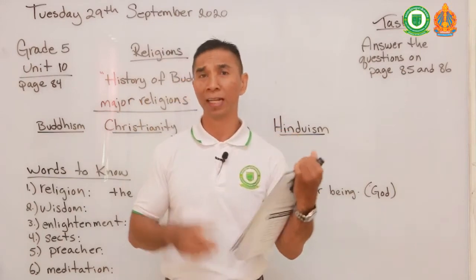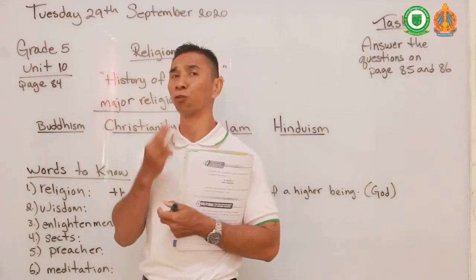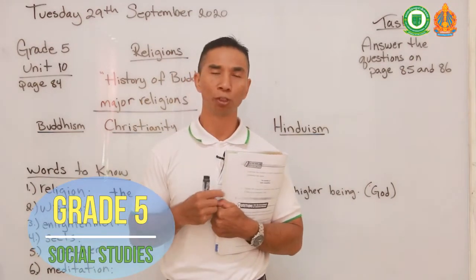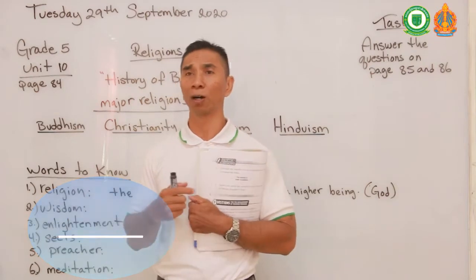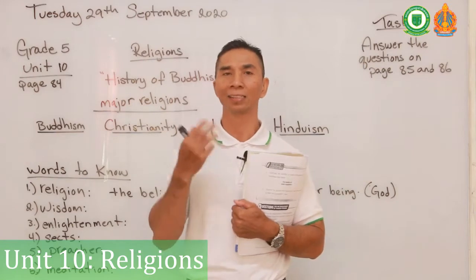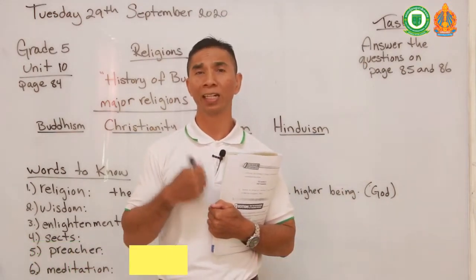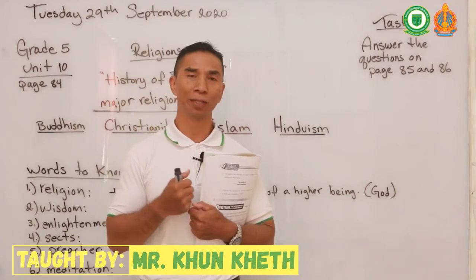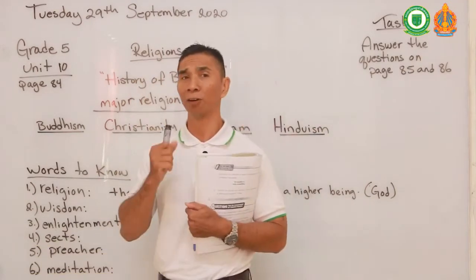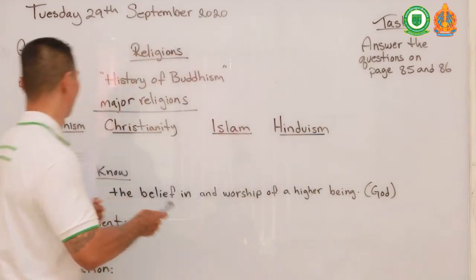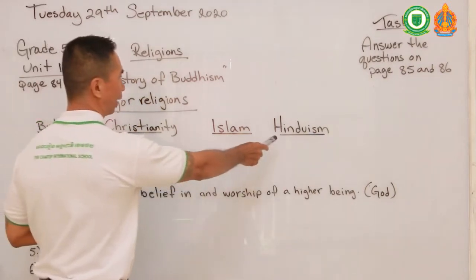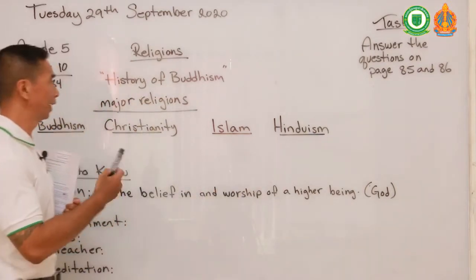On page 84 they're going to be talking about many religions, but in this world right now there are four major religions — those are the ones with the most people. As we know, there are many religions in this world; people believe in many different things like the sun, the moon, the trees, and even the rivers. But the four major religions are Buddhism, Christianity, Islam, and Hinduism.